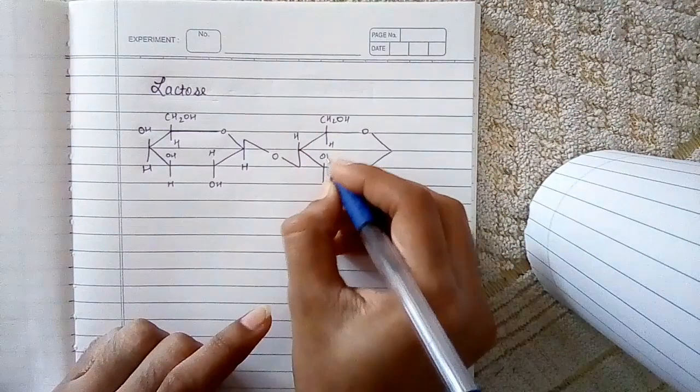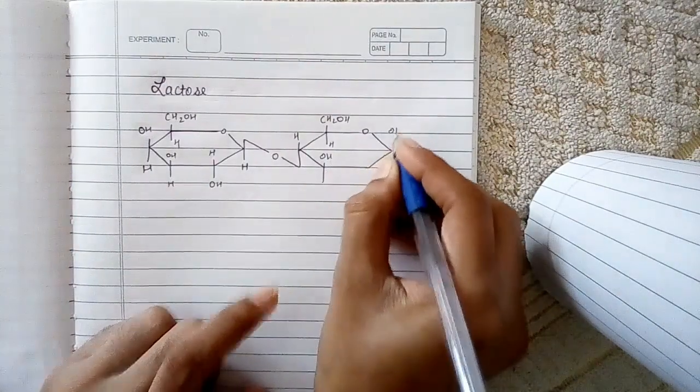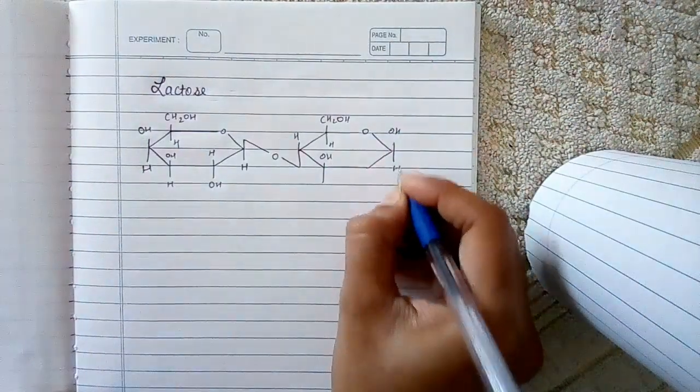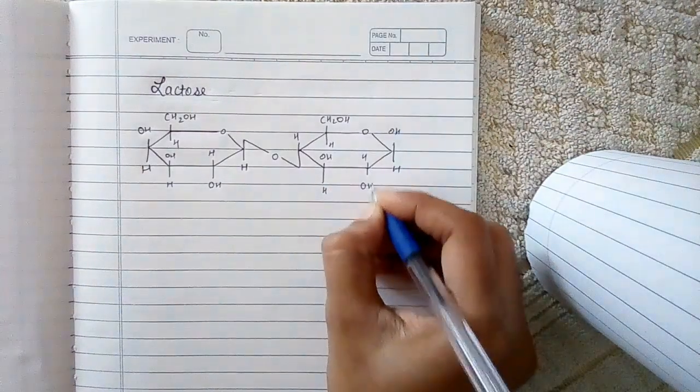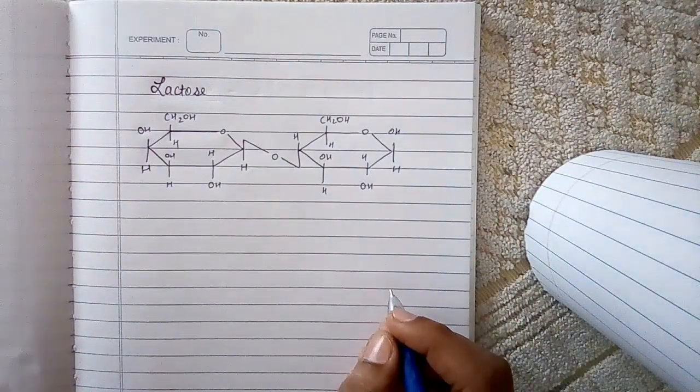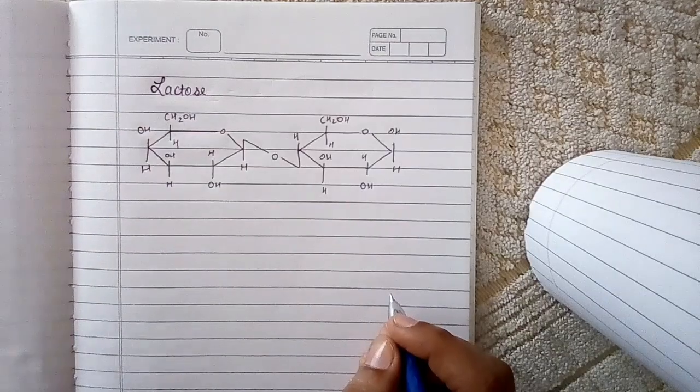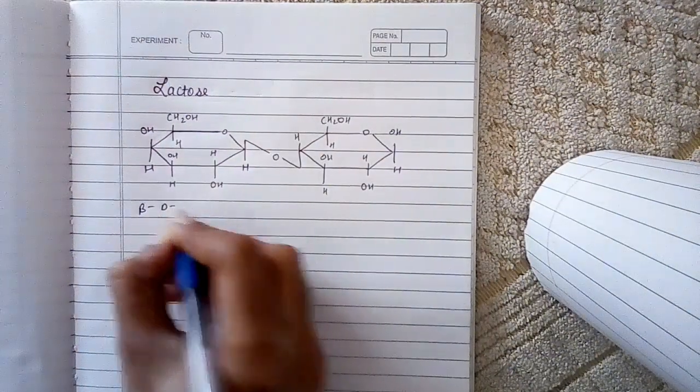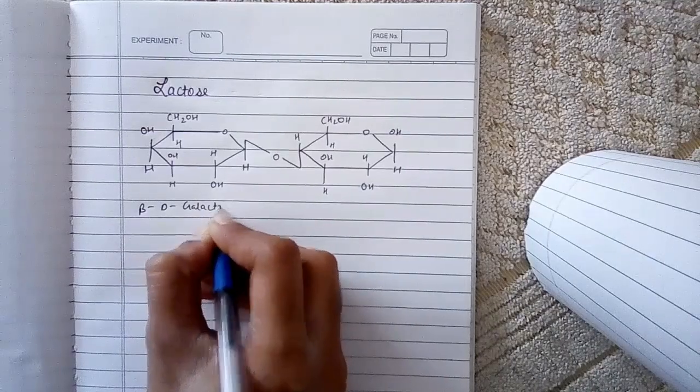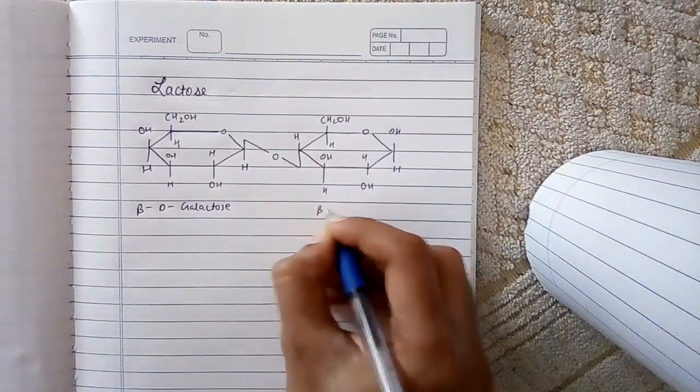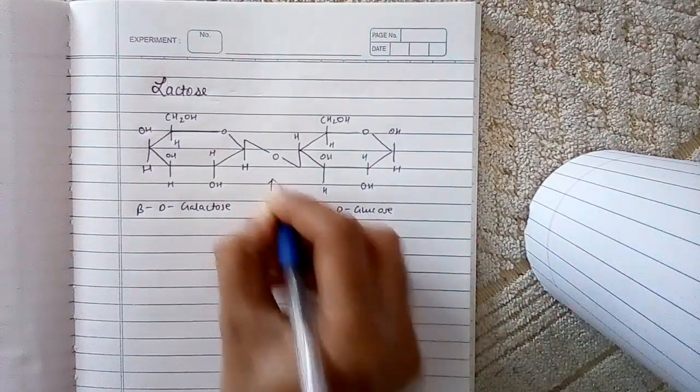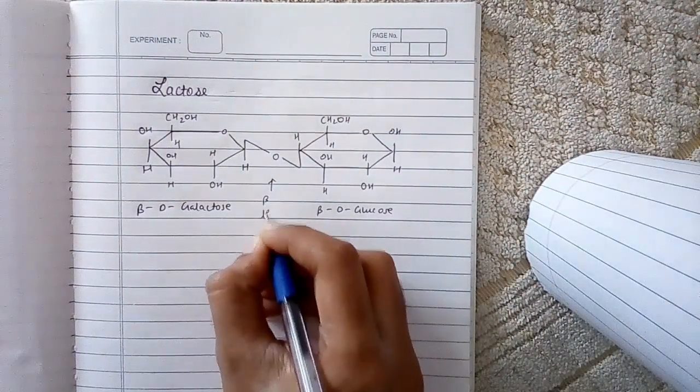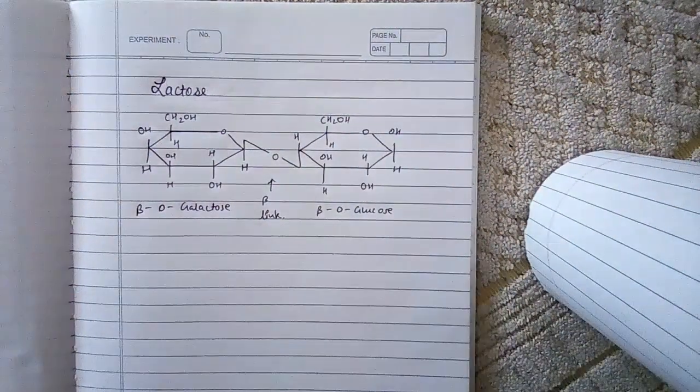See, this is beta-D-glucose, where OH is upwards and other things are similar. This is all you have to remember, and this is super easy. This is beta-D-galactose and this is beta-D-glucose joined by beta linkage. Thank you for watching.